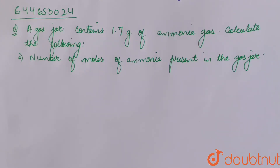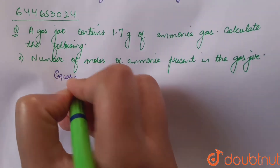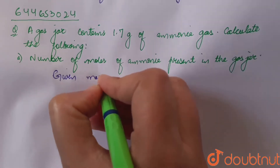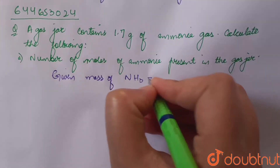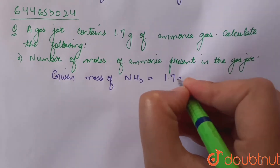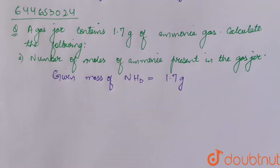The question says: a gas jar contains 1.7 grams of ammonia gas. Calculate the number of moles of ammonia present in the gas jar. Given: mass of ammonia (NH3) equals 1.7 grams. We need to calculate the number of moles of ammonia present in the gas jar.